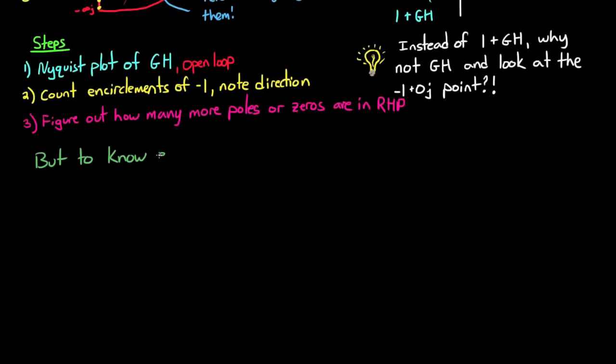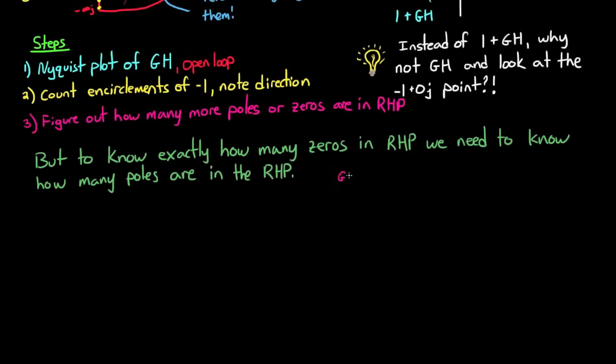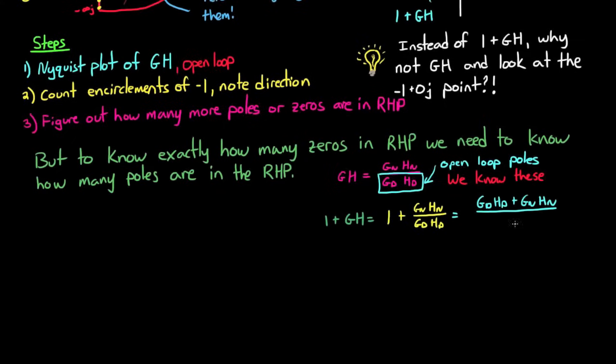But to know for sure whether there's a zero in the right half plane, we first need to know how many poles are in the right half plane. Luckily, we usually know exactly how many poles are in the right half plane of 1 plus GH, because it's the exact same number of poles in the right half plane as the open-loop system GH. And since we usually have a good understanding of our open-loop plant, then we already have that information.